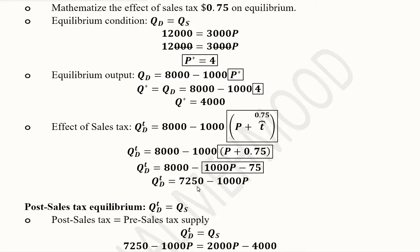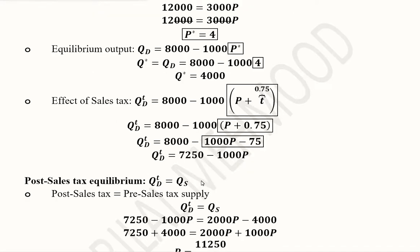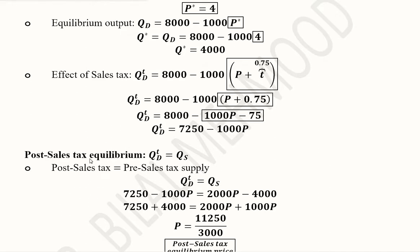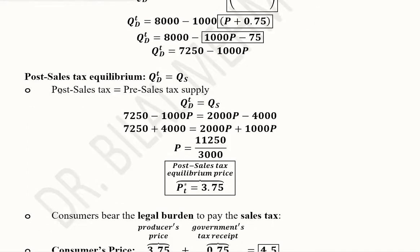The simplification leads to a new demand equation, which we will use instead of the original demand equation. This represents the post-sales-tax situation. The post-sales-tax equilibrium sets the new demand curve equal to the old supply curve, since supply is not affected — the tax is levied on the consumer side, not the supply side.